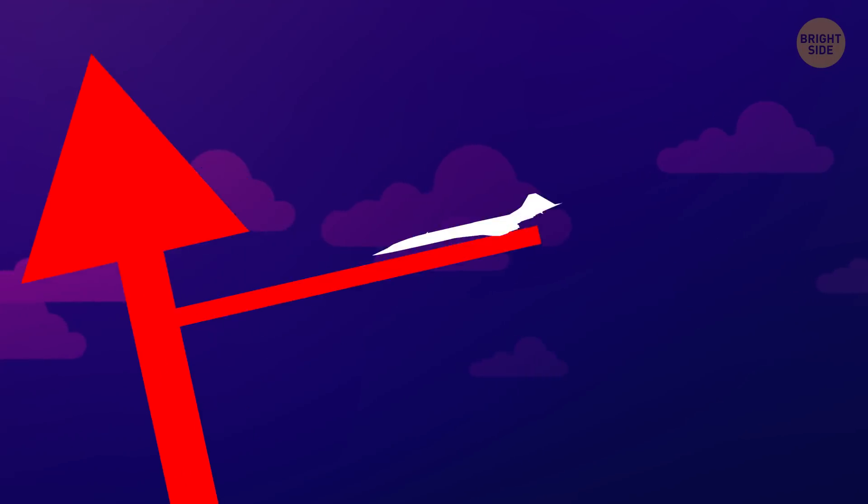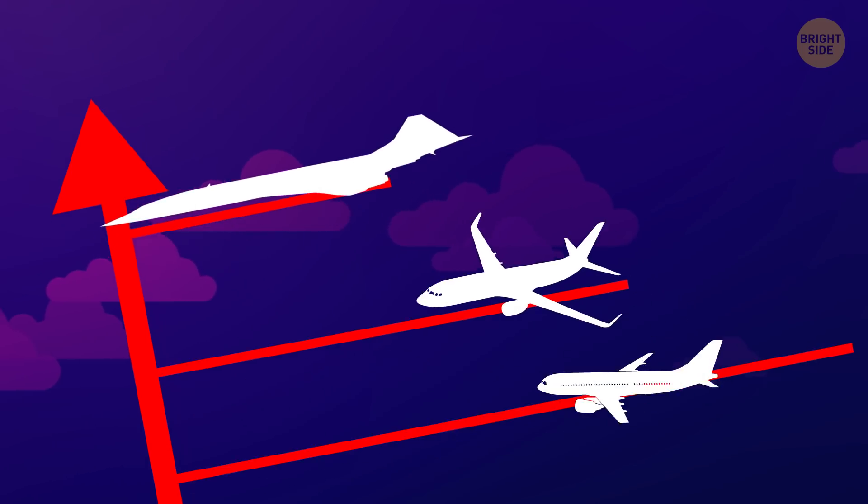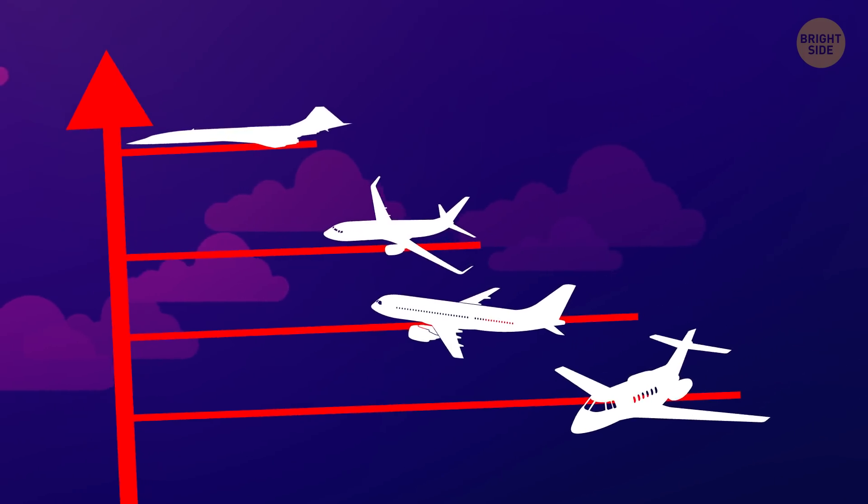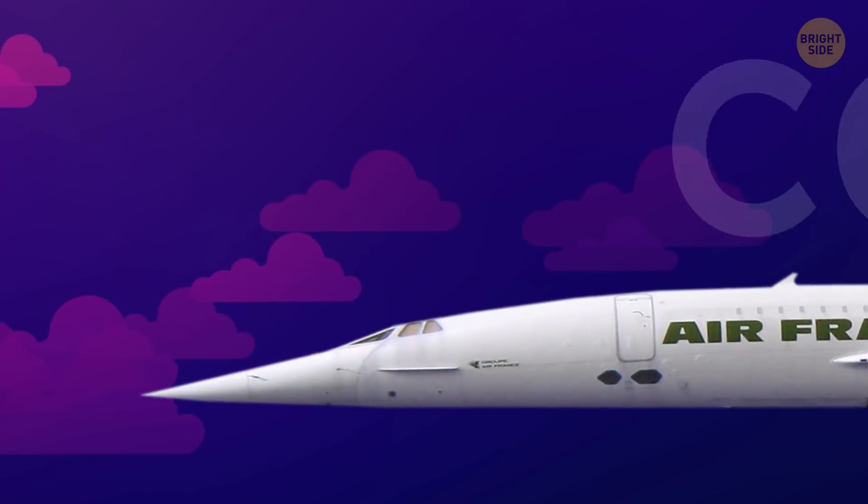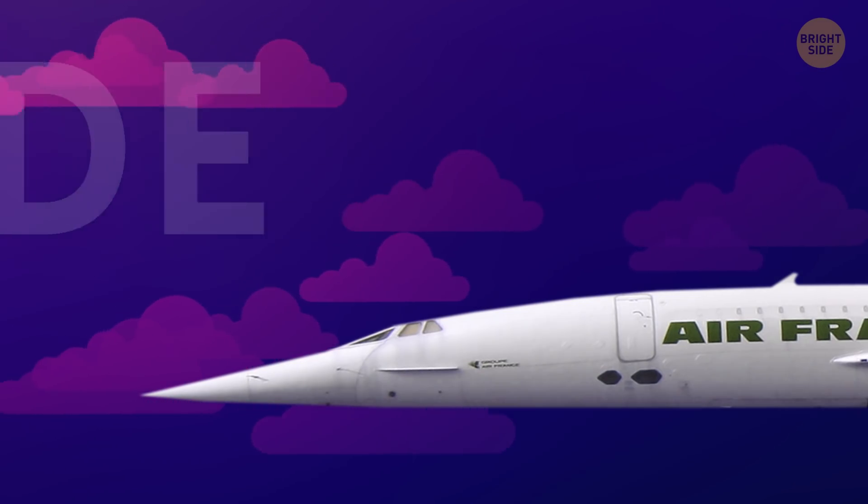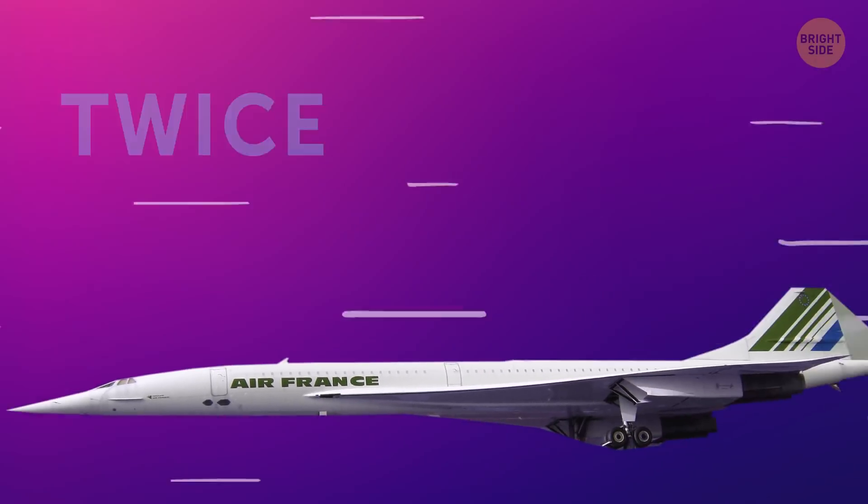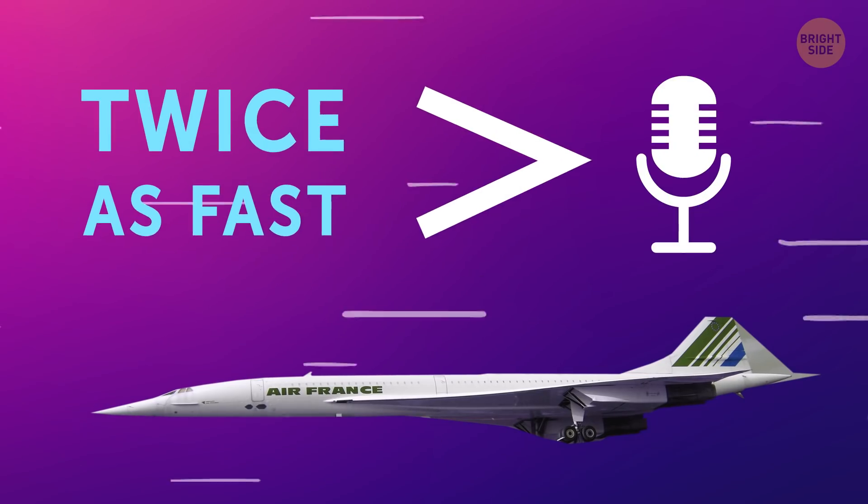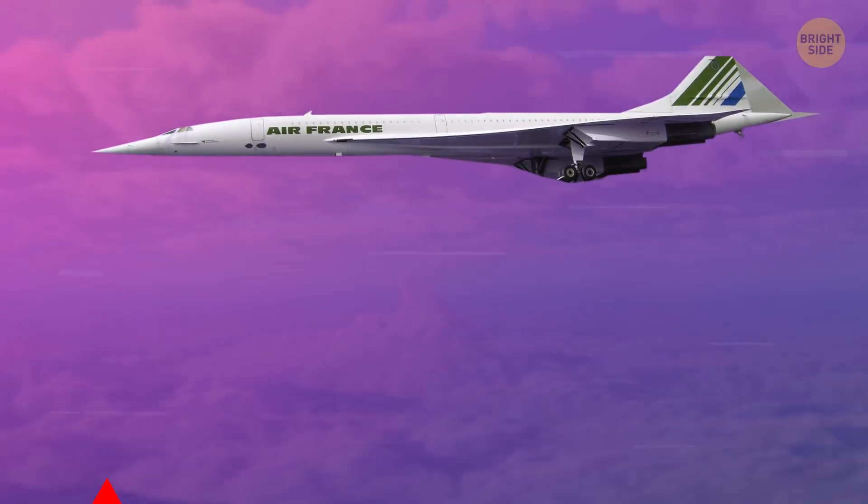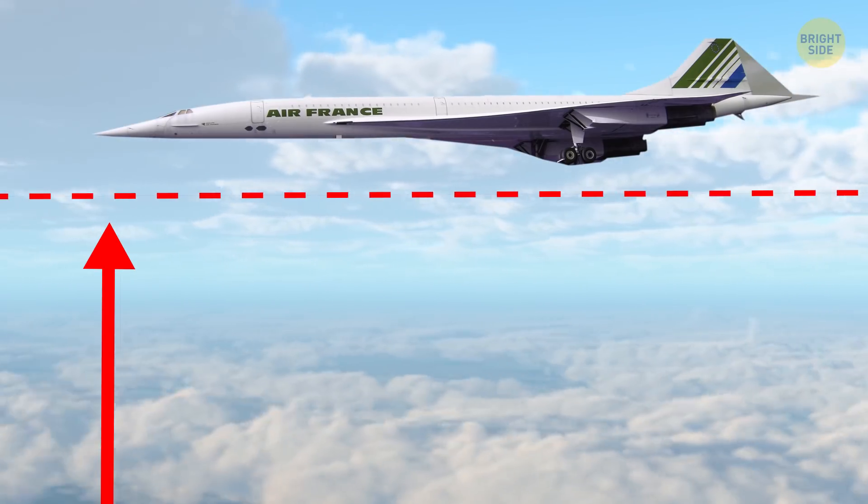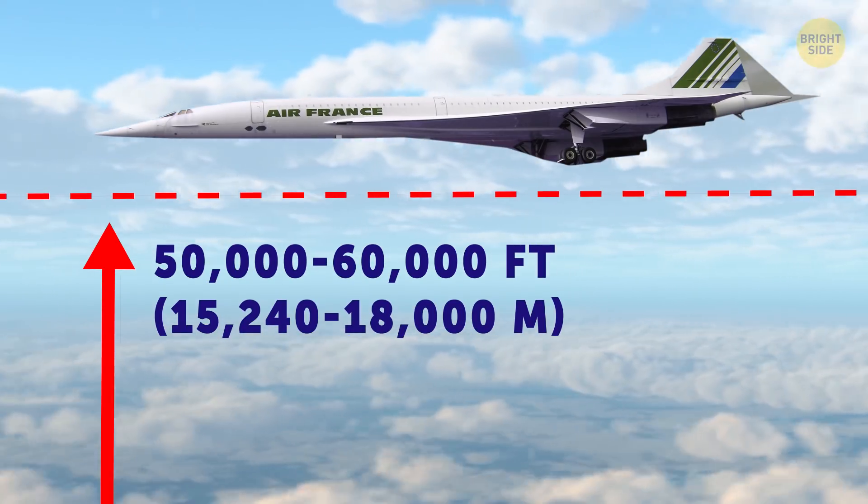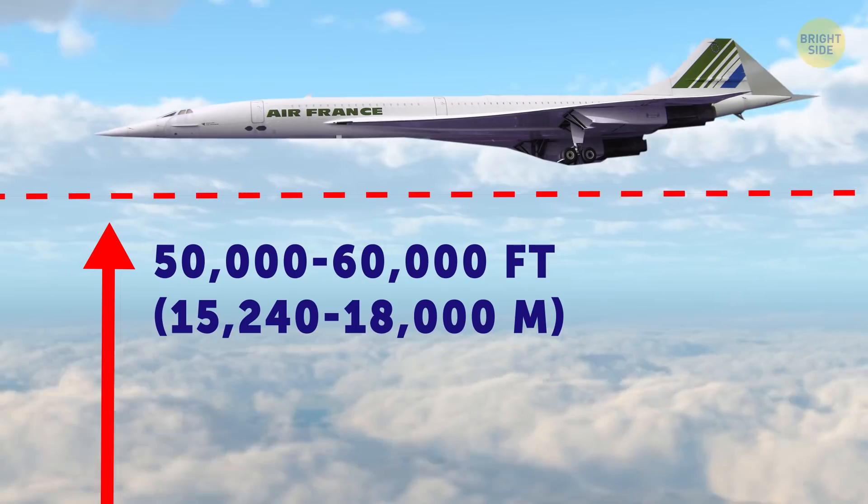On the other hand, each airplane has its own optimum cruising altitude, which is based on its weight and some other characteristics. For example, the famous supersonic passenger airliner Concorde, whose maximum speed was twice as fast as the speed of sound, used to fly way higher than other modern-day planes at 50,000-60,000 feet. But it's the exception rather than the rule.